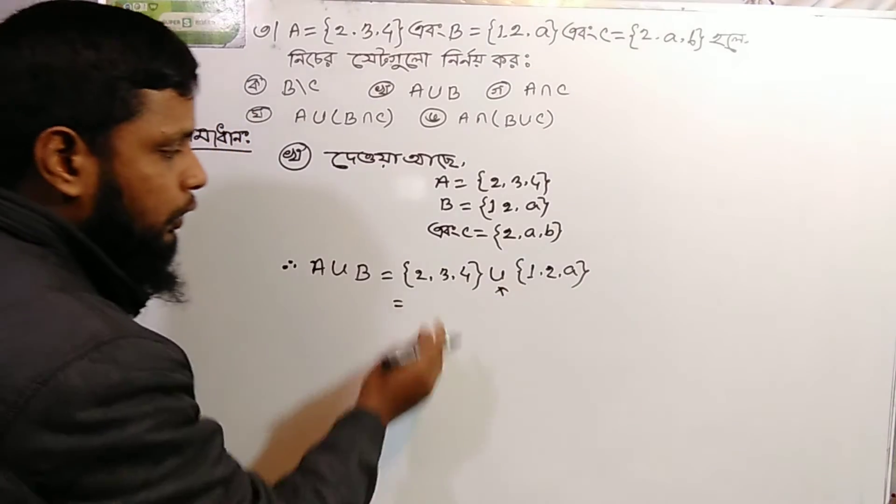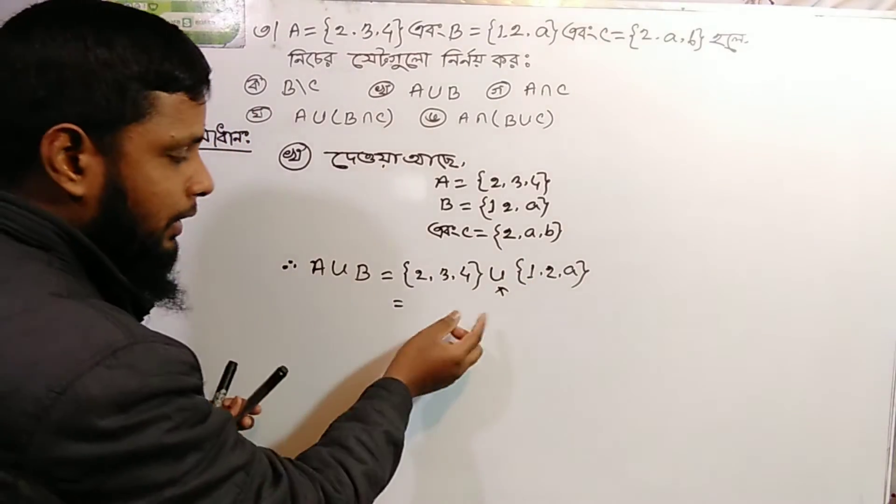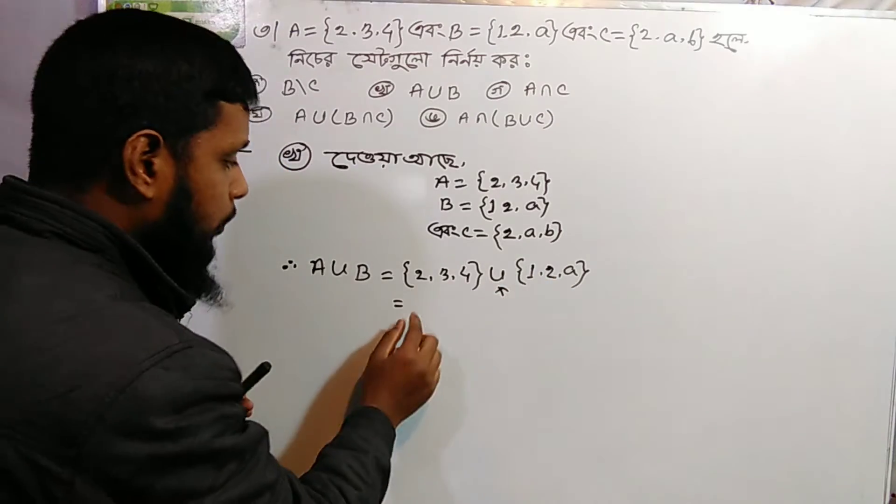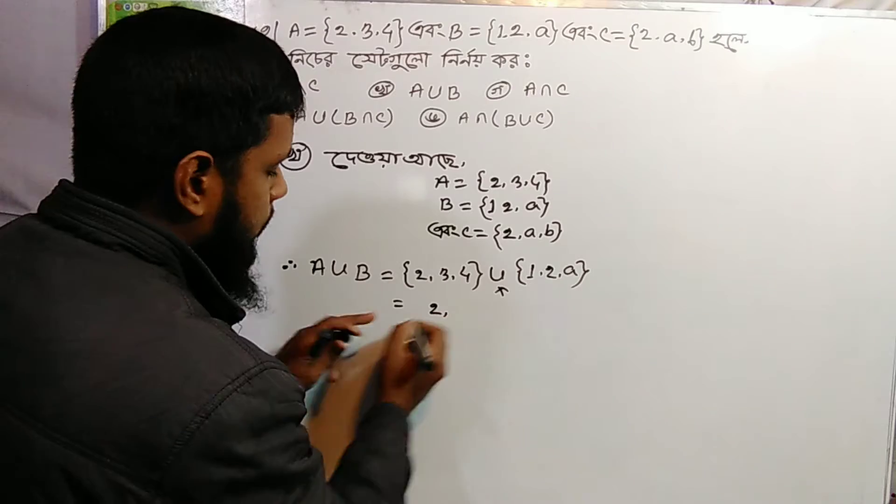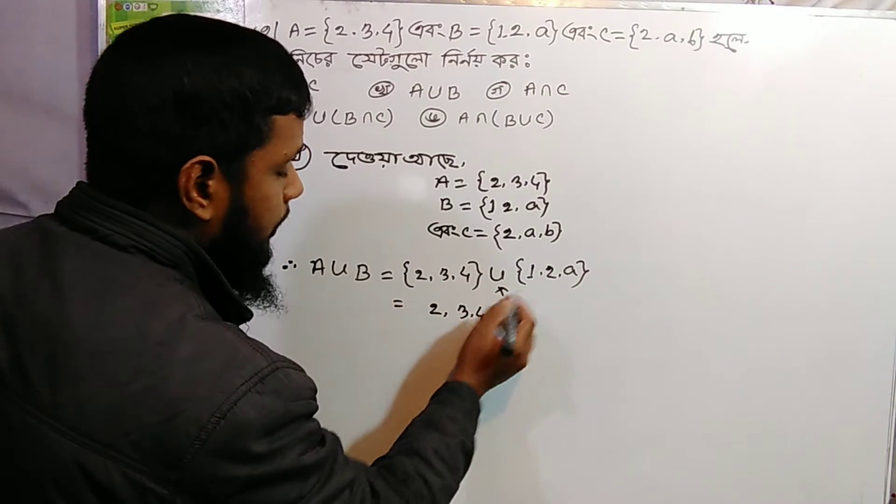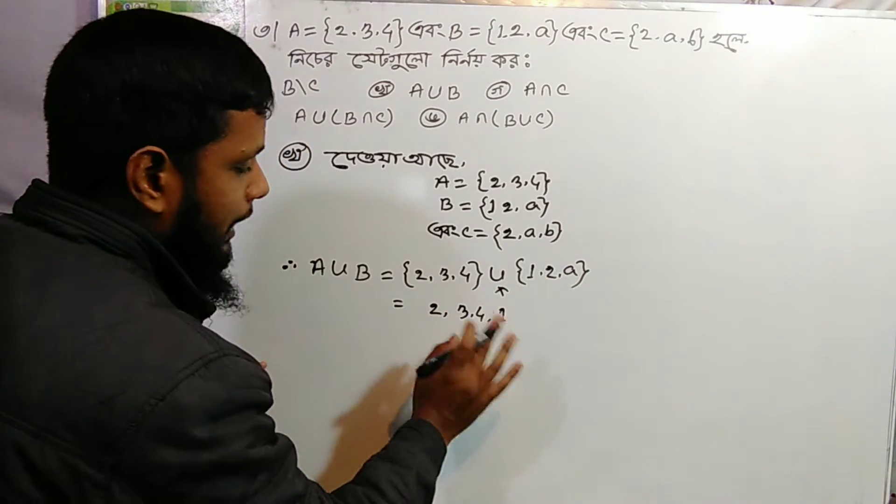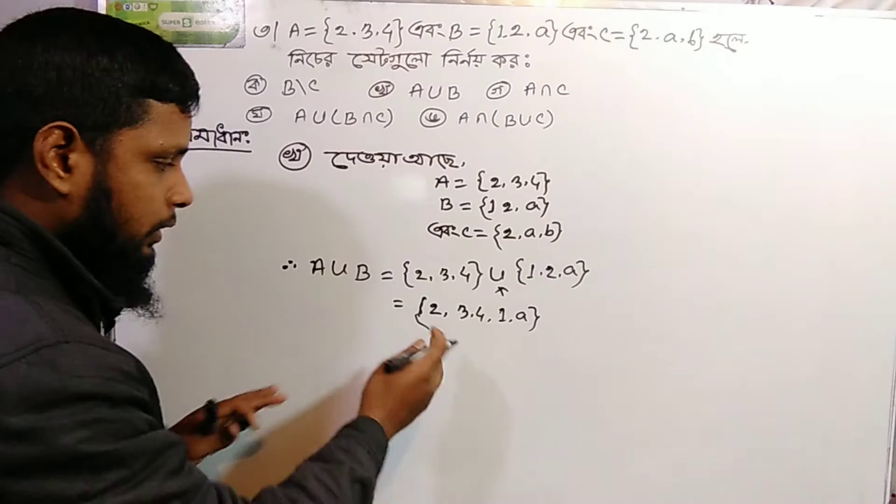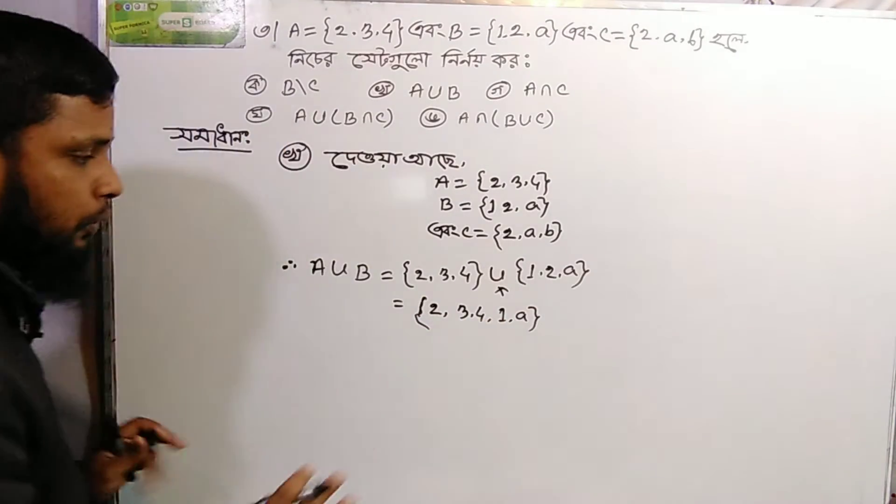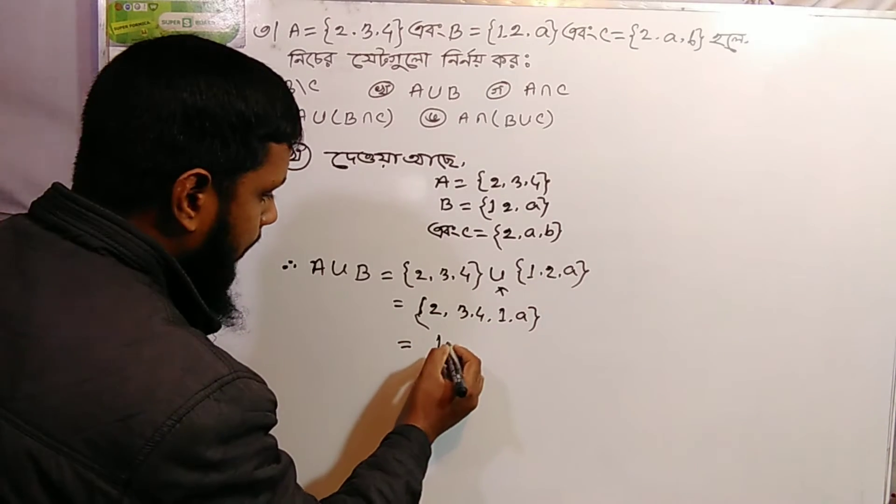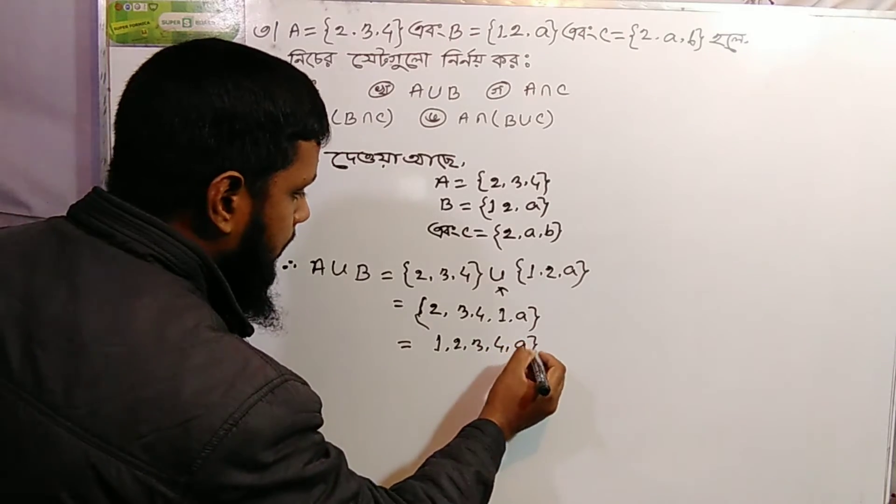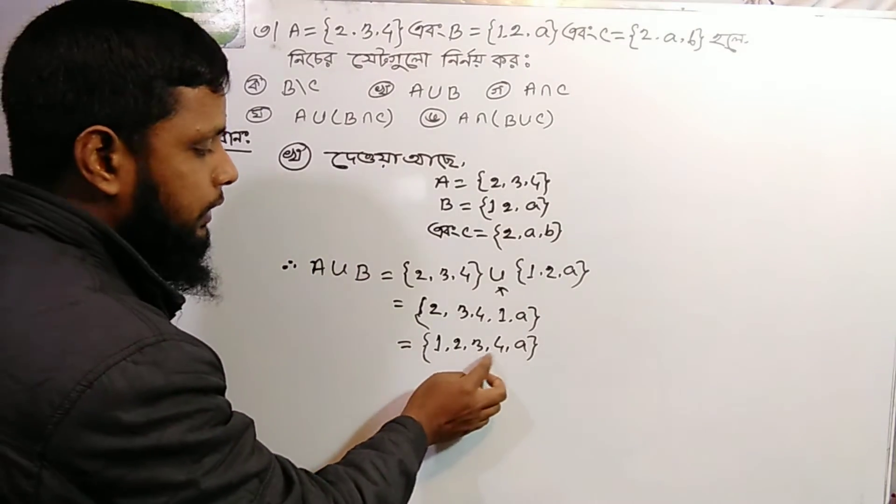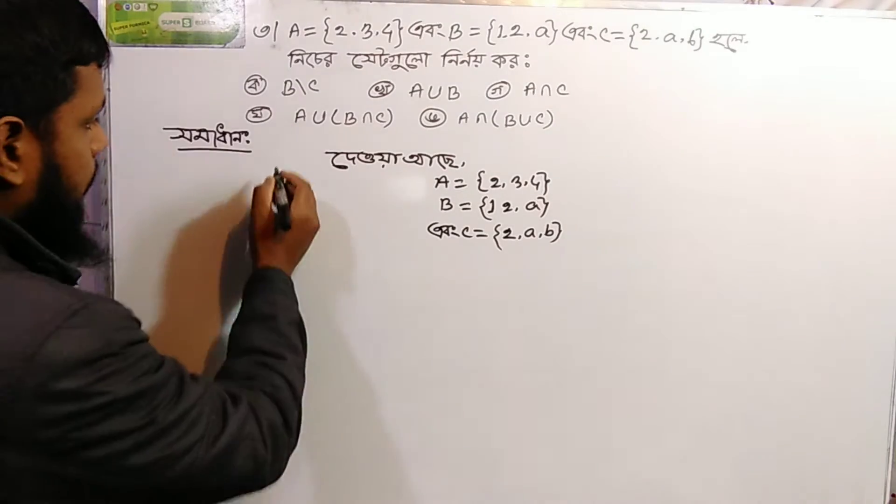A union B equals {2, 3, 4} union {1, 2, a}, which gives us {1, 2, 3, 4, a}. So this is the answer for A union B.